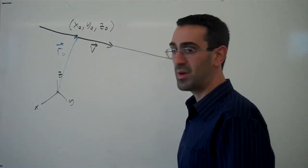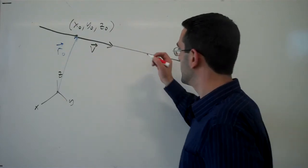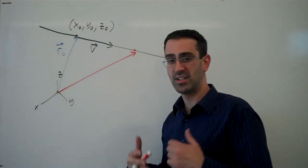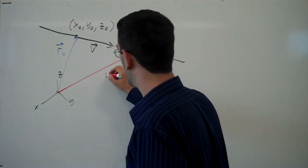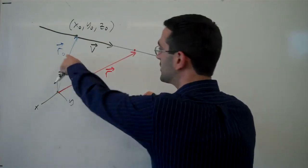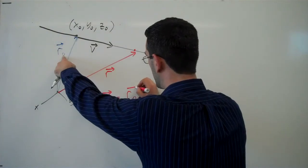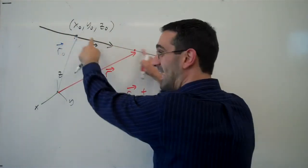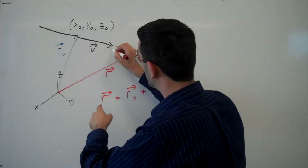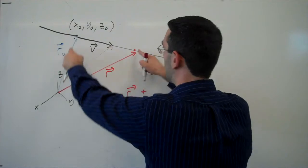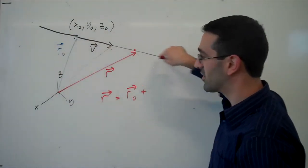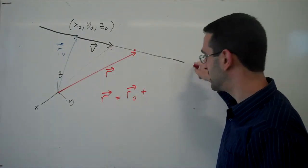Then any point on the line can be represented as the end of a vector r, where that vector r is the original r naught point plus some scaling of the vector v. Because this would be r naught plus 1v, this might be r naught plus 2v, 3v, 4v. We're combining this vector r naught with scalings of that vector v.